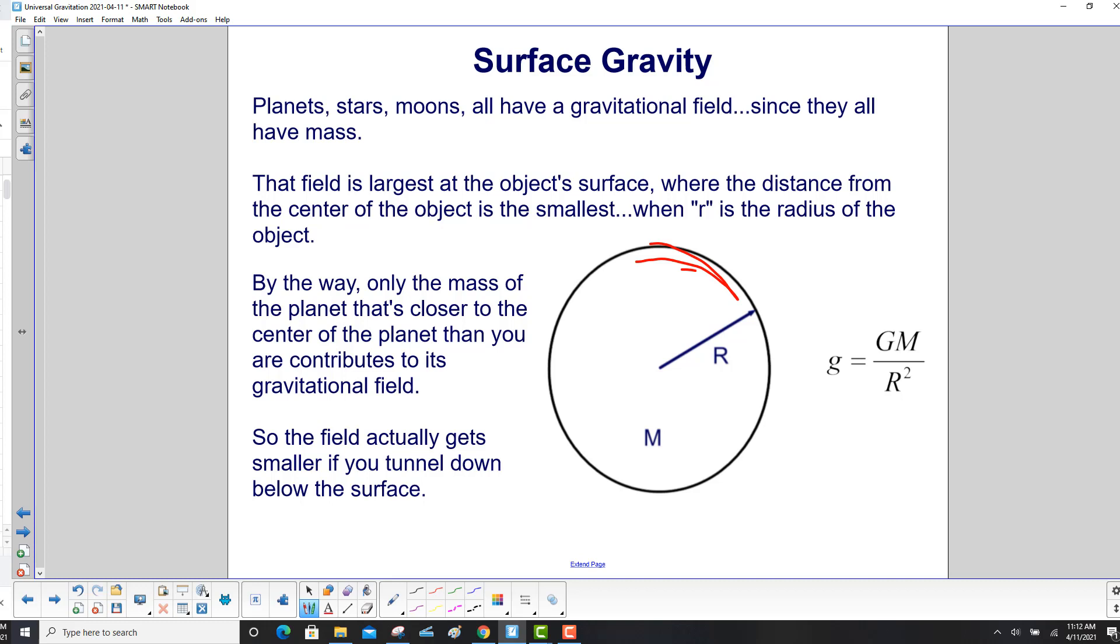By the way, only the mass of the planet that's closer to the center of the planet than you contributes to the gravitational field. So the field actually gets smaller if you tunnel down below the surface.